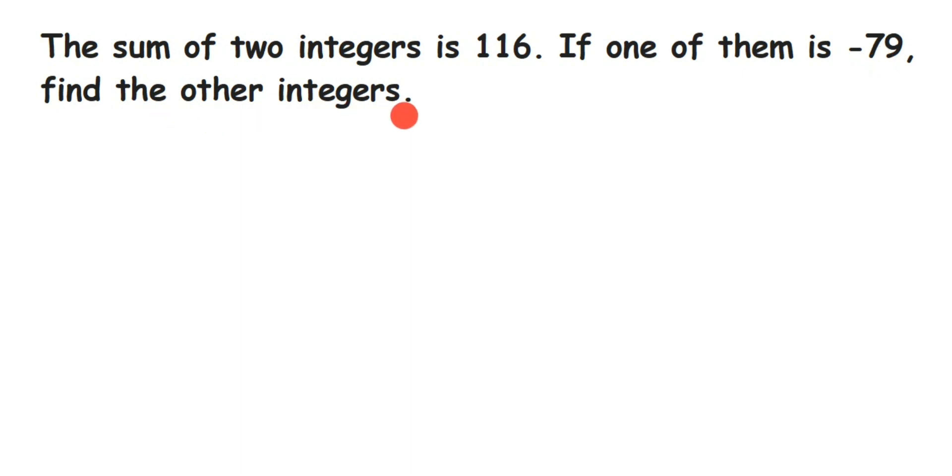So in the question they have given two things to us. One is sum of two integers which is 116, and the second one is out of two numbers they have given one number which is -79. We have to find the other one.